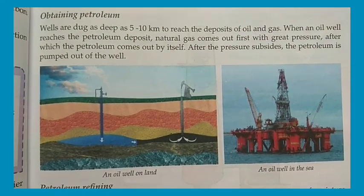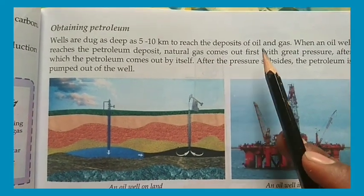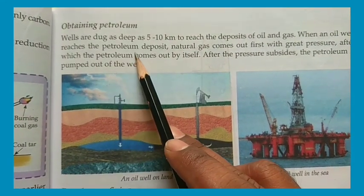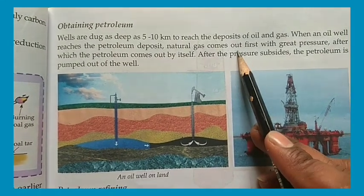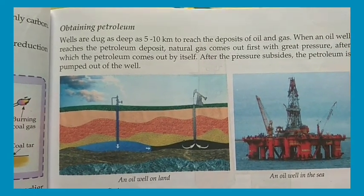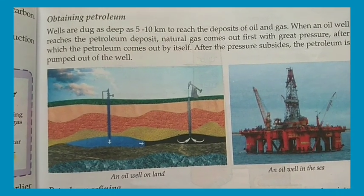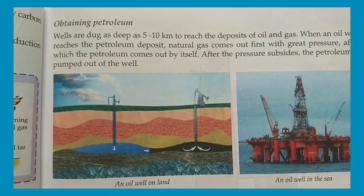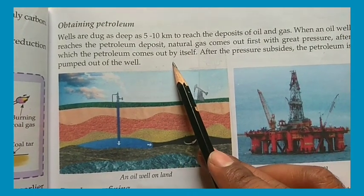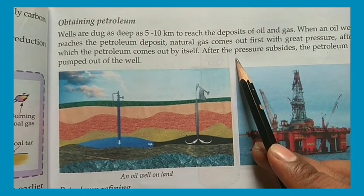We search for deposits of oil and gas 5 to 10 km deep under the seabed. When an oil well is drilled and reaches the petroleum deposits, natural gas comes out first at great pressure, after which petroleum comes out by itself. Different products of petroleum are then obtained.